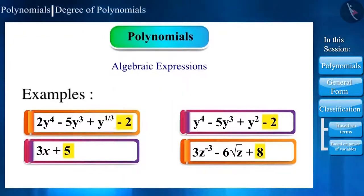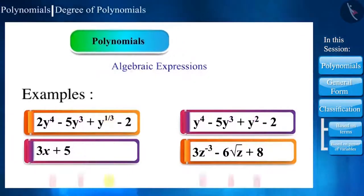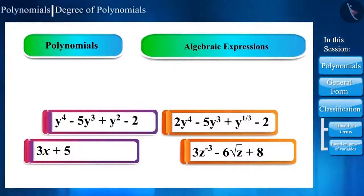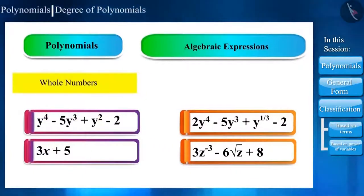Now, if we focus on the powers of these variables, these are positives, negatives and fractions. And friends, the only difference between polynomials and expressions is that the power of variables in polynomials is always a whole number. Whereas, the power of variables in expressions can be any number.